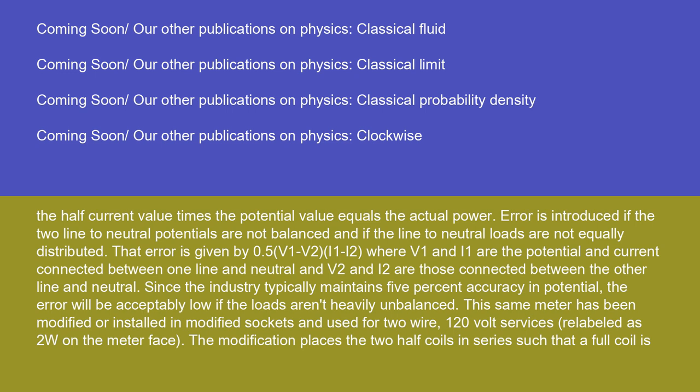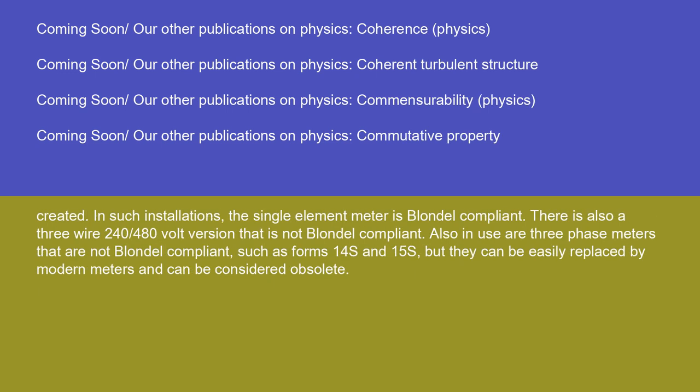This same meter has been modified or installed in modified sockets and used for two-wire 120-volt services, relabeled as 2W on the meter face. The modification places the two half-coils in series such that a full coil is created, and in such installations the single-element meter is Blondel compliant. There is also a three-wire 240/480-volt version that is not Blondel compliant. Also in use are three-phase meters that are not Blondel compliant, such as Forms 14S and 15S, but they can be easily replaced by modern meters and can be considered obsolete.